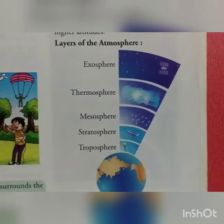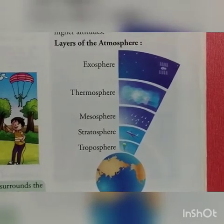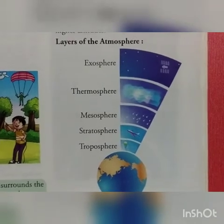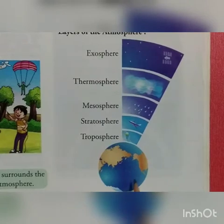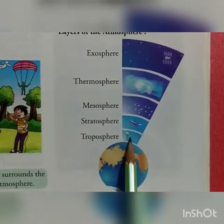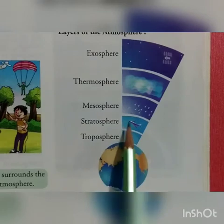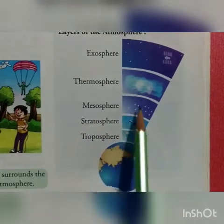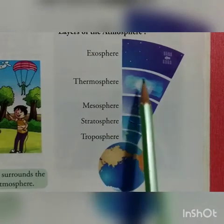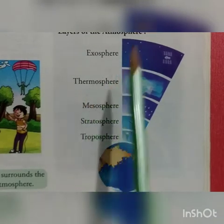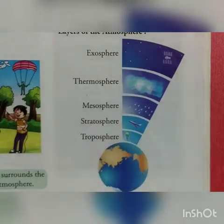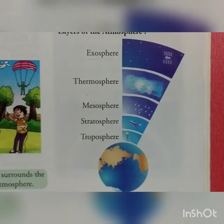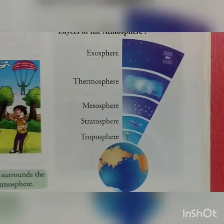There are five layers of the atmosphere: the first is the troposphere, the second is the stratosphere, the third is the mesosphere, the fourth is the thermosphere, and the last is the exosphere. Let us discuss each one.